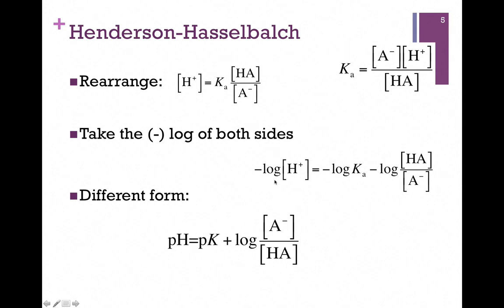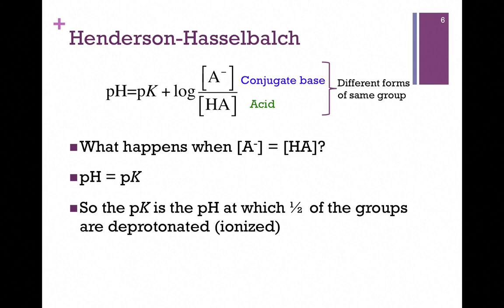But now we can simplify this expression further because we know that the negative log of H-plus is pH, the negative log of Ka is our pKa or pK. Let's convert this negative log to a positive log, and in order to do that, I need to invert the numerator and denominator. So now we have an expression that relates pH and pK. This is the Henderson-Hasselbalch equation.